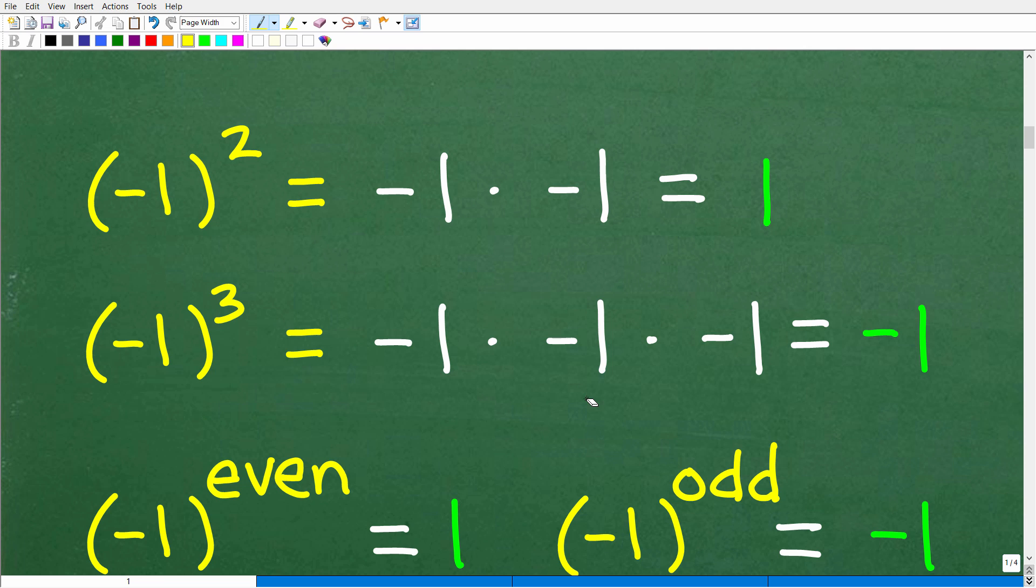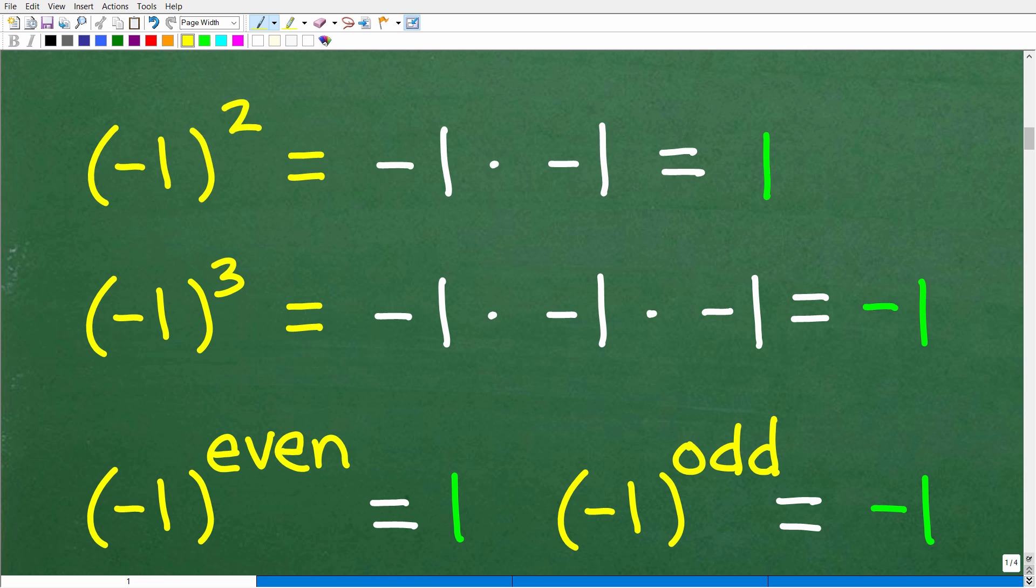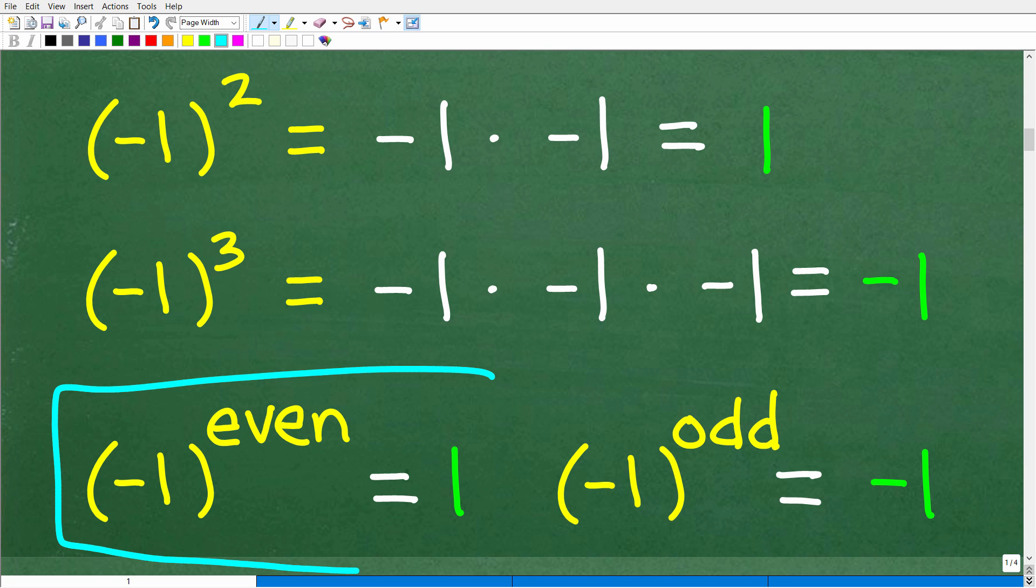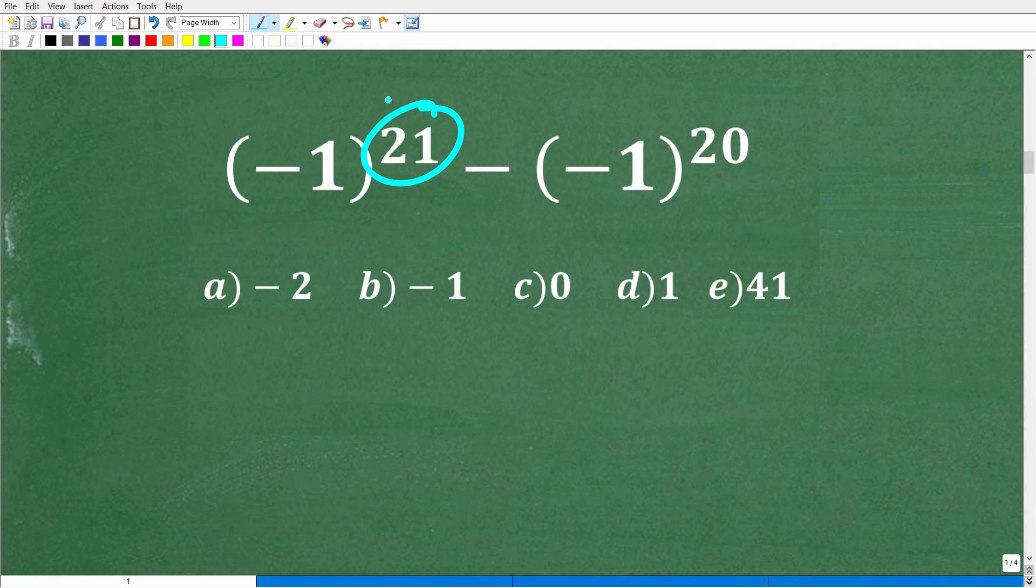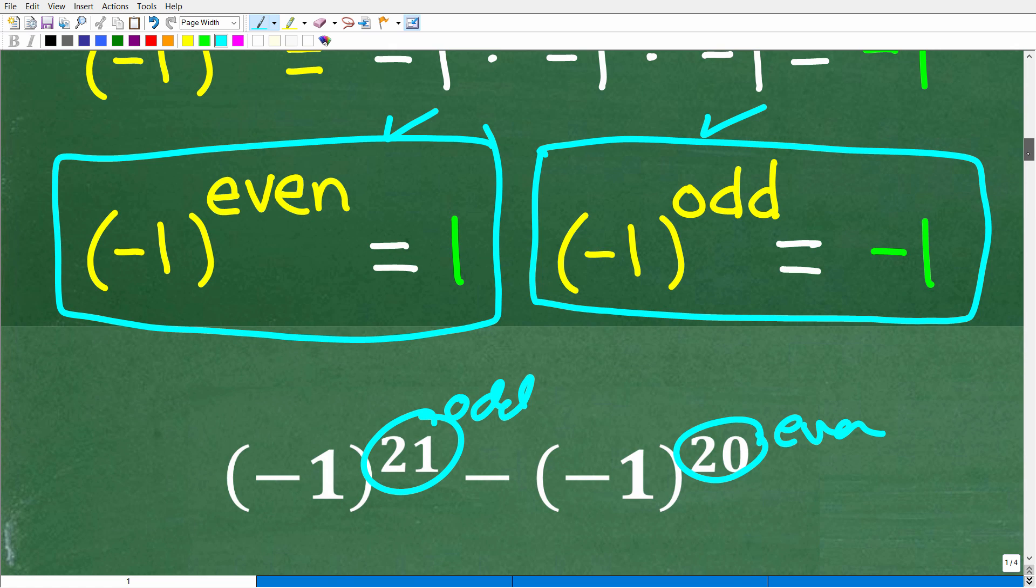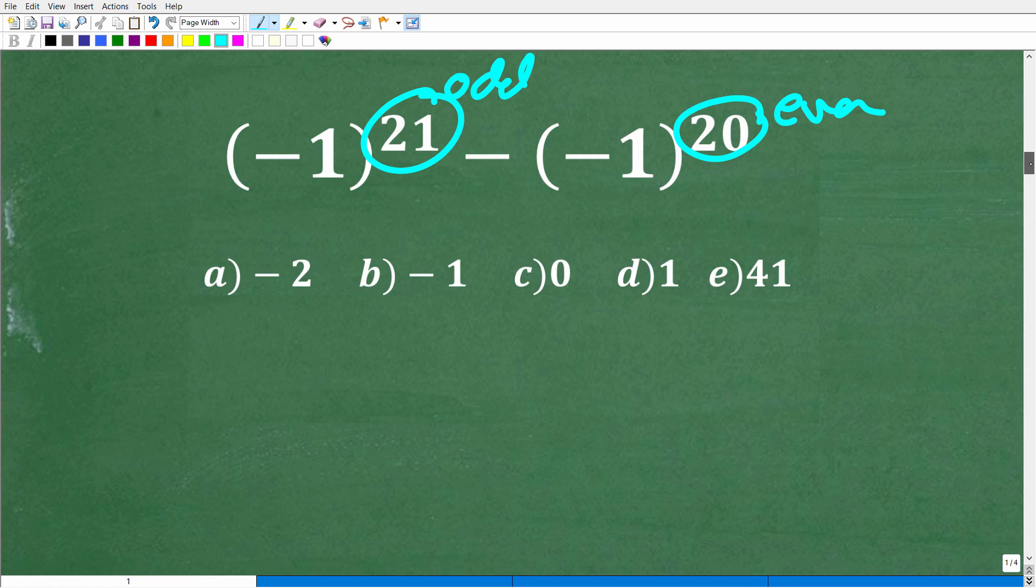Now, you could continue to run more trials here just to get convinced that the pattern that we have here is that negative one to an even power is positive one and negative one to an odd power is negative one. Now, I'm only showing you two little examples, but you could say, OK, let me try negative one to the fourth and negative one to the fifth, just to double confirm. But if you can determine a pattern, something like this, well, it's going to make our life much easier. So let's go ahead and apply what we have here, this pattern of powers of negative one to the problem.